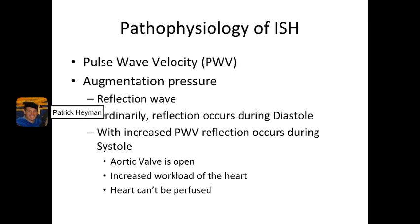In addition to the increased pulse wave velocity, there's also an augmentation pressure. When your heart generates a pressure wave, it sends the wave down the arterial tree, and then that pressure wave reflects back. Usually, the reflection occurs during diastole, which raises diastolic pressure and helps to perfuse the heart. However, when you have increased pulse wave velocity, the reflection occurs much earlier and will eventually occur during systole. Now the aortic valve is still open, the heart is trying to pump blood into the aorta, and suddenly this wave reflection comes back, trying to push blood back through the aortic valve into the ventricle — and that is going to increase the workload of the heart even more.